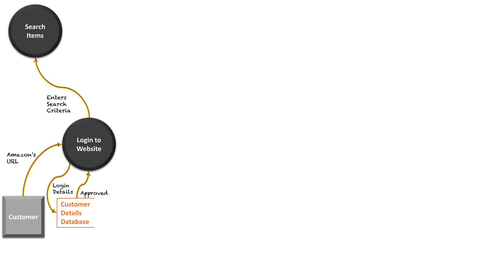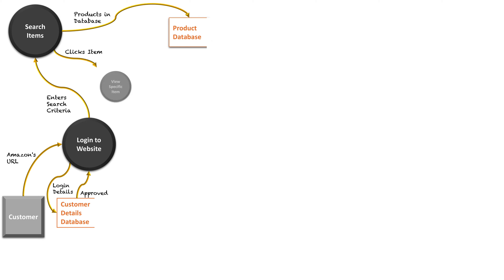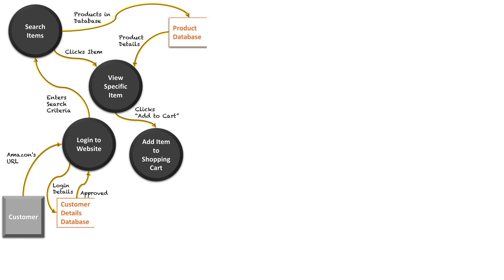From here, they can start navigating the website. They enter a search criteria to search items, which allows them to look through Amazon's product database and see all the products stored within it based on that search criteria. When they want to view a specific item, they click on it and the item's details are retrieved from the product database. If they like a specific item, they click 'add to cart' and it gets added to their shopping cart.